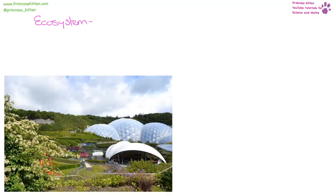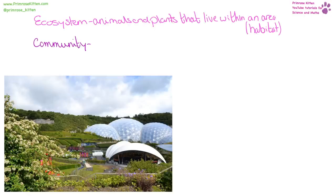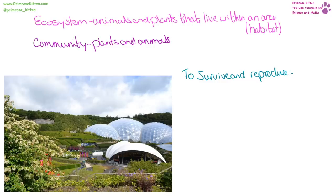An ecosystem comprises the animals, plants, and everything living within a certain area. The community is the plants and animals that live there — they are all dependent upon one another and cannot survive without each other. For example, animals eat plants and can't survive without them, and plants rely on animals to distribute their seeds. To survive and reproduce, a species needs food, water, air, and sometimes a mate.